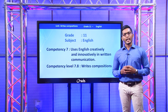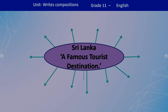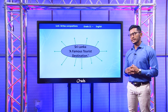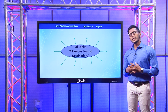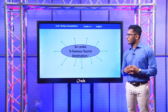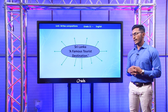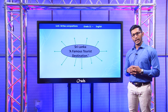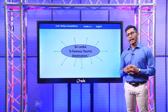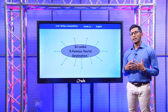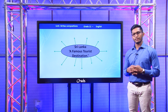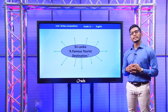Before getting started, let's do a small activity. Look at the screen here. I have written a topic there: Sri Lanka, a famous tourist destination. I want you to take a paper and write this topic in the middle of it. What are the words and phrases that come into your mind when you read this topic? You can see there are two keywords: Sri Lanka and tourist destination. I'm sure you get lots of words and phrases — pictures of wildlife, ancient places, historical sites, and so many. So take a few seconds and try to jot down these ideas.